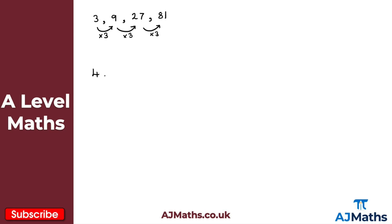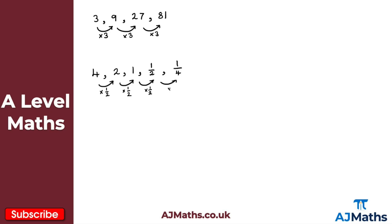We might also have something like 4, 2, 1, a half, and a quarter. This is another example of a geometric sequence where the common ratio is a half. To go from term to term we multiply by a half: 4 times a half gives 2, 2 times a half gives 1, 1 times a half gives a half, and a half times a half gives a quarter.